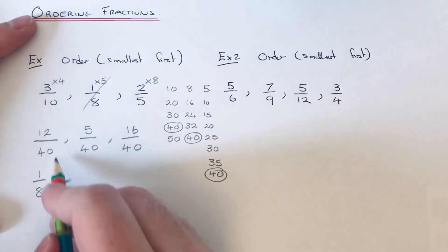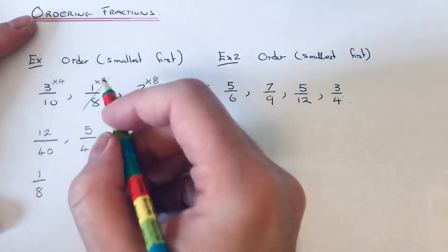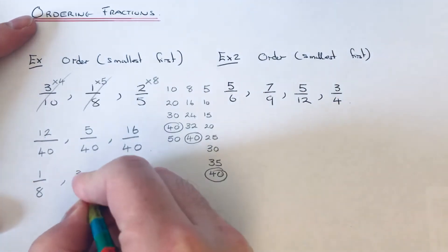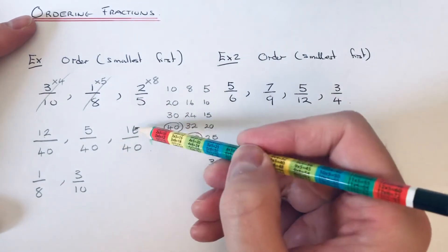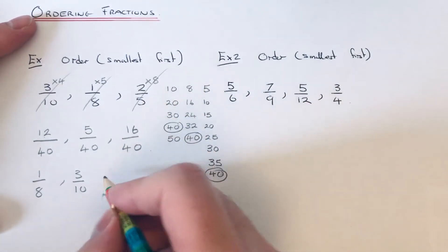Then it will be 12/40, so that is 3/10, and then our biggest fraction is 16/40, which is 2/5.